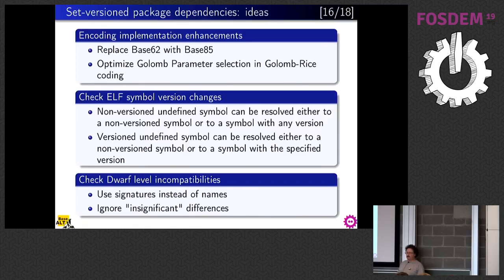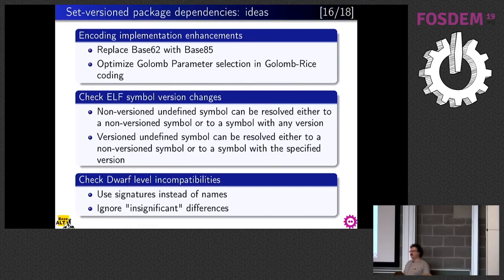We also have ideas about detecting DWARF-level incompatibilities using function signatures — not just names but somewhat reduced signatures to ignore insignificant differences. But we're still thinking about what counts as insignificant: for example, a signed/unsigned difference is mostly insignificant in practice when talking about ABI. On some architectures, long and long long are insignificant because they don't differ — they're exactly the same — but the compiler can detect a difference.